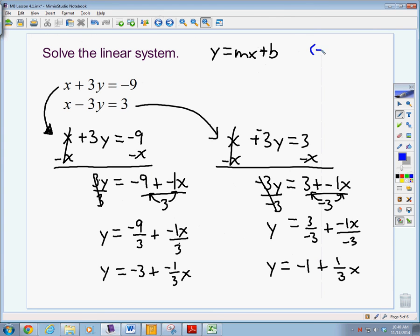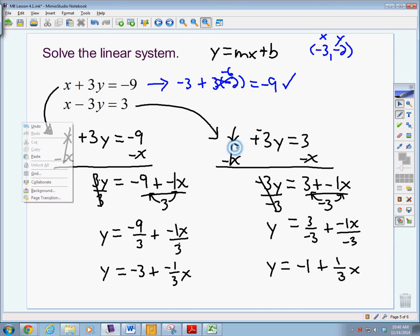We said our solution was negative 3, negative 2. x value, y value, that would be negative 3 plus 3 times a negative 2. Well, negative 3 plus 3 times a negative 2 would be negative 6. Negative 3 plus negative 6 is a negative 9.